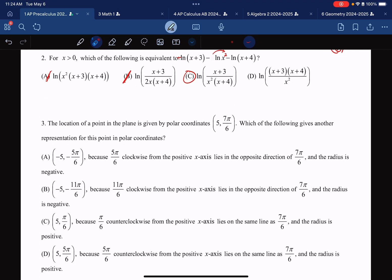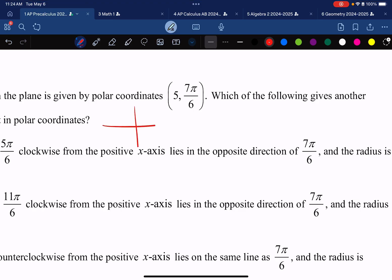All right, moving on to part three. We need to figure out where 5, 7π over 6 is and match it with one of these and see where it actually lives.